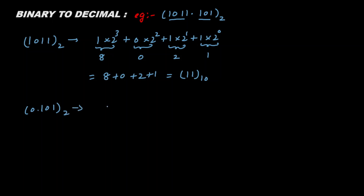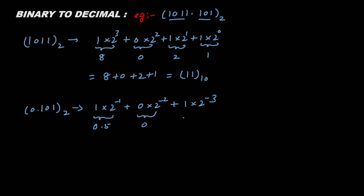For the fractional part — point one zero one — we will also write the position weight multiplied by the digit. This gives one into two to the power minus one, plus zero into two to the power minus two, plus one into two to the power minus three. Solving this: we get 0.5, zero, and 0.125. Adding them: 0.5 plus zero plus 0.125 gives 0.625, approximately 0.62.